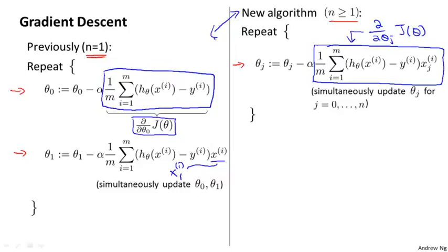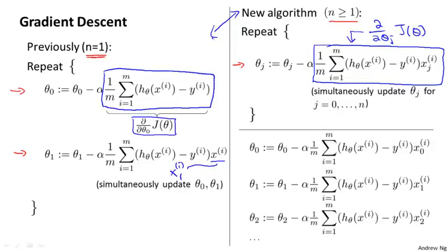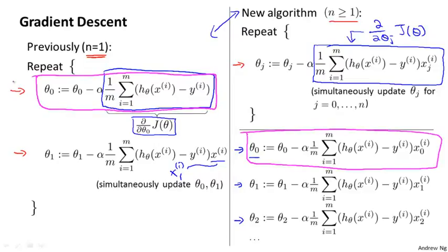Let's consider a case where we have two features or maybe more than two features. So we have three update rules for the parameters theta 0, theta 1, theta 2, and maybe other values of theta as well. If you look at the update rule for theta 0, what you find is that this update rule here is the same as the update rule that we had previously for the case of n equals 1. And the reason that they're equivalent is,